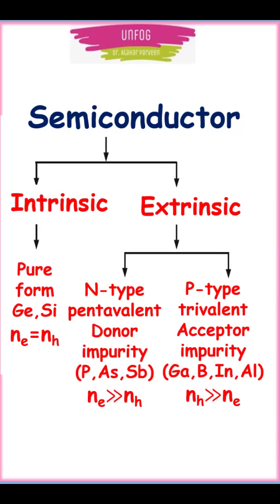Semiconductors are classified into intrinsic and extrinsic semiconductors. Intrinsic semiconductors are of pure form and extrinsic semiconductors are doped semiconductors.